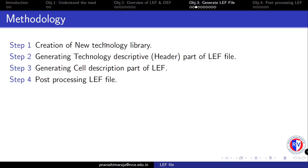Now let us break down this methodology into the following procedural steps. First is the creation of a new technological library, then the creation of the technology descriptive part or the header part of the LEF file, third is generating the cell descriptive part of the LEF file, and finally the post-processing of the LEF file where we merge these two parts together with some modifications.